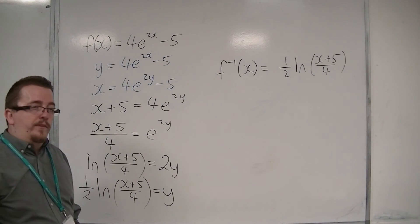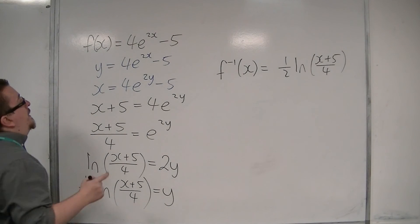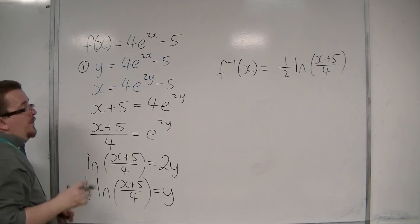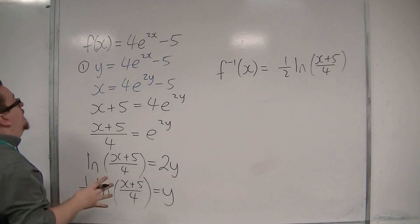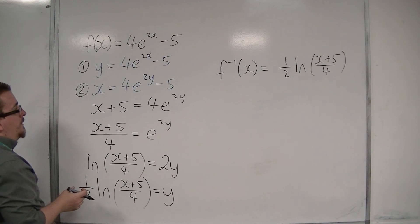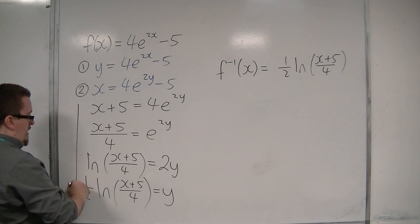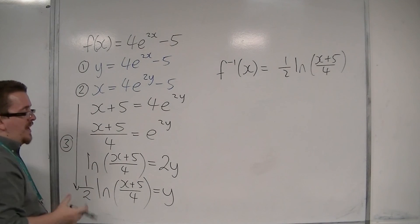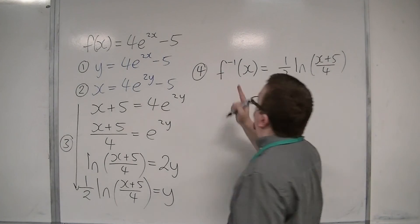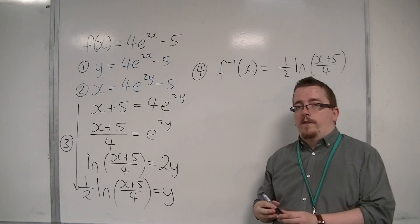But this is the process. So it comes down to this. Write y equals, instead of f of x equals first. Step 2, swap the x's and y's. Step 3 is rearranging the equation to get y equals. And then, finally, step 4, replace your y with f to the minus 1 of x.